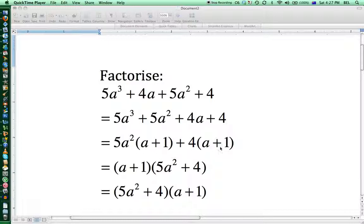You'll notice this expression has (a + 1) and (a + 1). So (a + 1) is a common factor, and we're going to take that common factor out the front. So (a + 1) at the front leaves behind 5a² + 4.